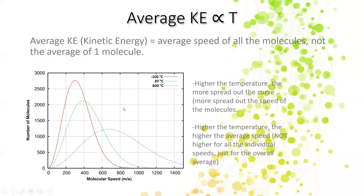This is why average kinetic energy is important. If you were looking at a gas at 600 degrees Celsius — that blue line — and you pulled out one gas molecule and it was moving maybe 150 meters per second, you might think this gas must not be very hot. But because the distribution is so wide — and it gets wider the hotter you get — it's not fair to just look at one molecule, because that one molecule probably won't give you an accurate picture of the gas as a whole. The same goes the other way: if one molecule is moving super fast, the gas may not be as hot as you think. We have to look at the average for all of them. So: higher temperature means a more spread-out curve, and higher temperature means a higher average speed.